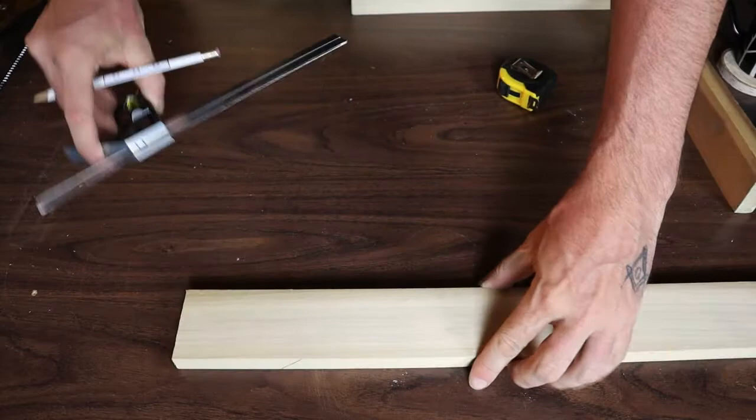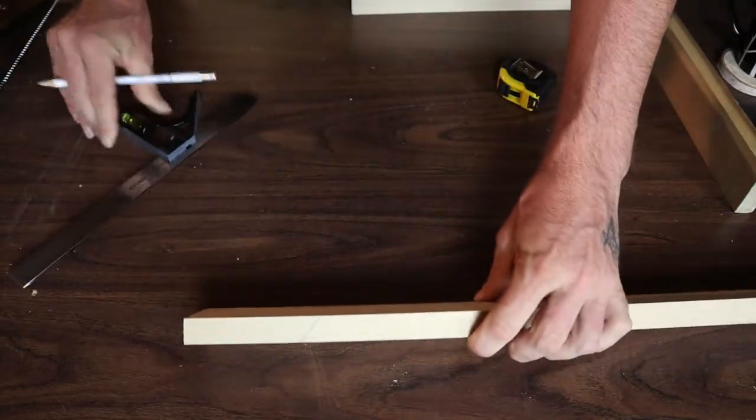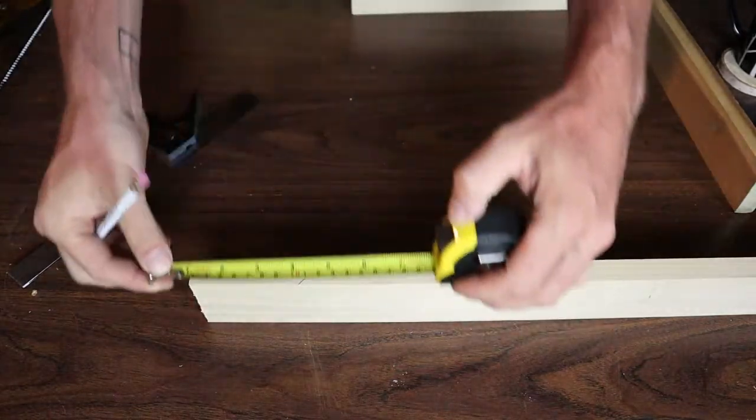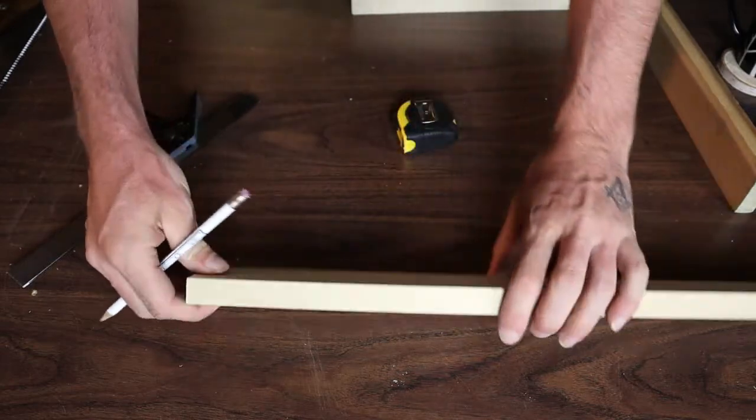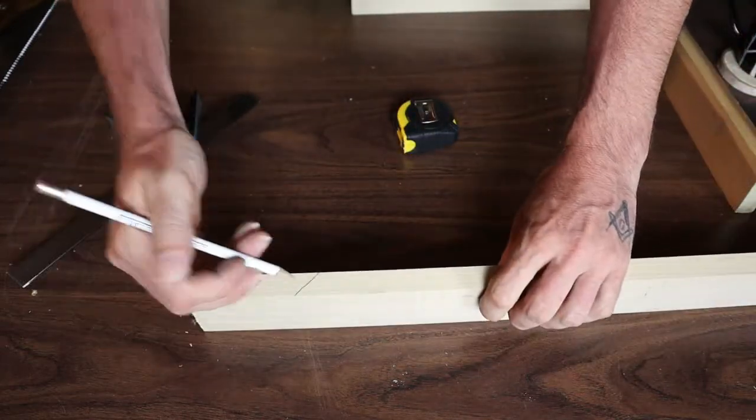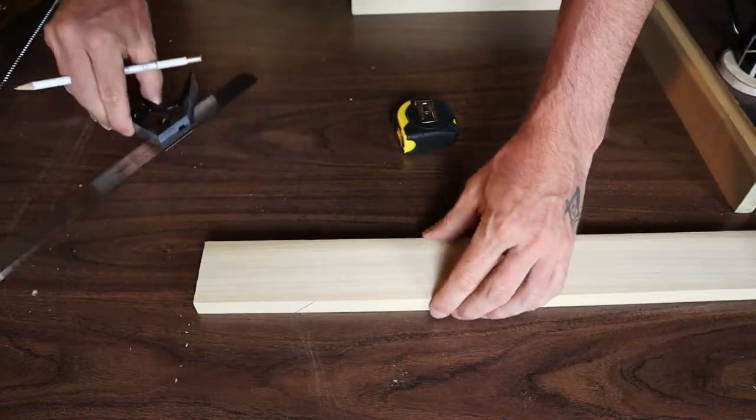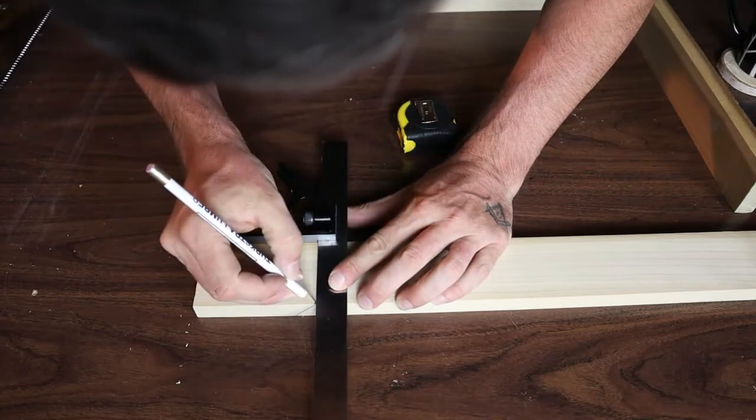So if you have a combination square that's going to be the easiest way to draw these lines across. But if you don't have a combination square or a square of any kind, measure the distance from here to the bottom of that line, draw it on the other side, mark it on the other side I should say, and then you'll have lines on each side the same and you can draw your line across. But with a combination square it's going to be super easy to just draw that line across.